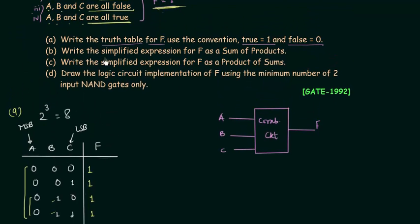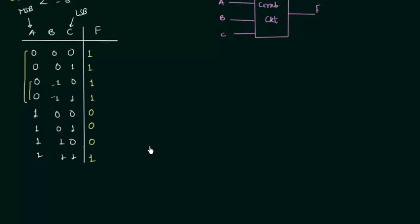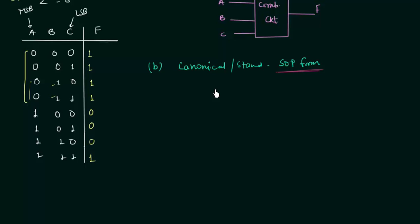In the second part, we have to write the simplified expression for F as sum of products. We can obtain the canonical or standard SOP form directly from the truth table. In SOP form, if a variable is equal to 0 we write its complement, and if it is equal to 1 we write it as is. We will consider all the cases for which F is equal to 1 — we have 5 such cases.